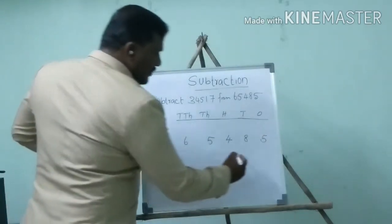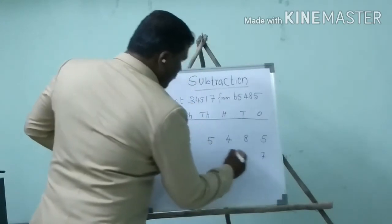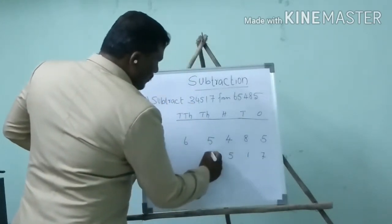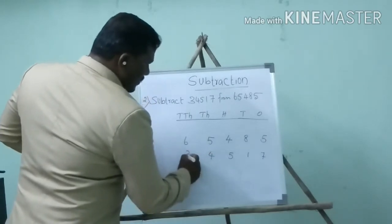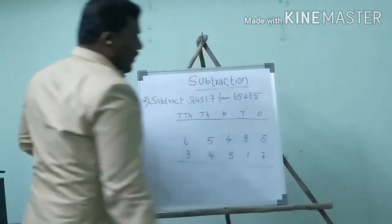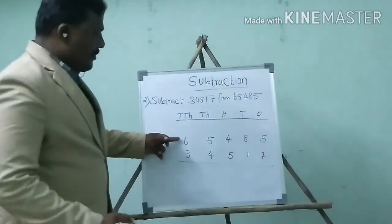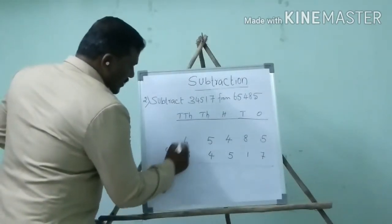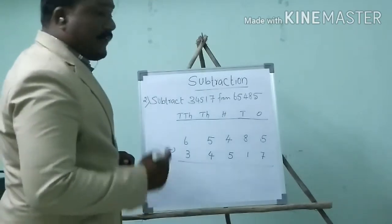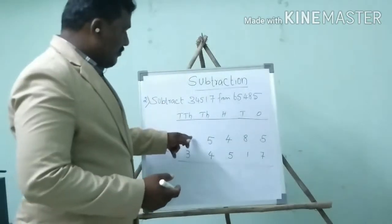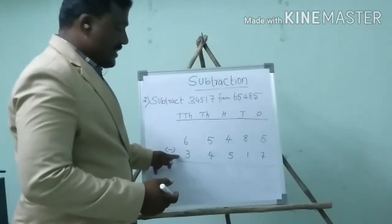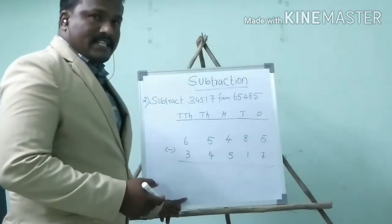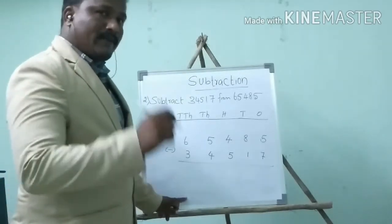Now the subtrahend: 7, 1, 5, 4, 3. It is the minuend, it is the subtrahend. Whenever you do the sum, just mark it — it is a minuend, it is a subtrahend. When you find the answer, it is a difference. You have to mark it in your notebook.